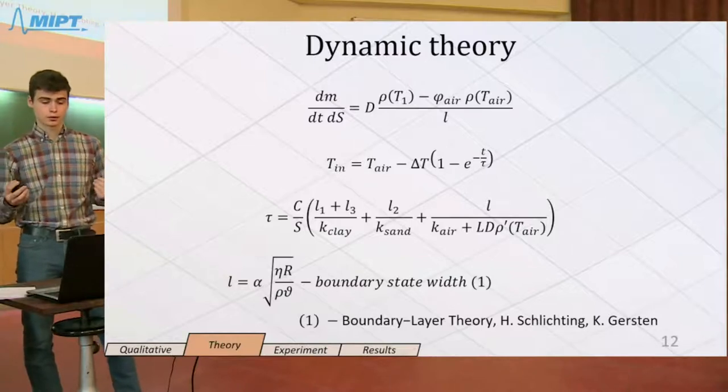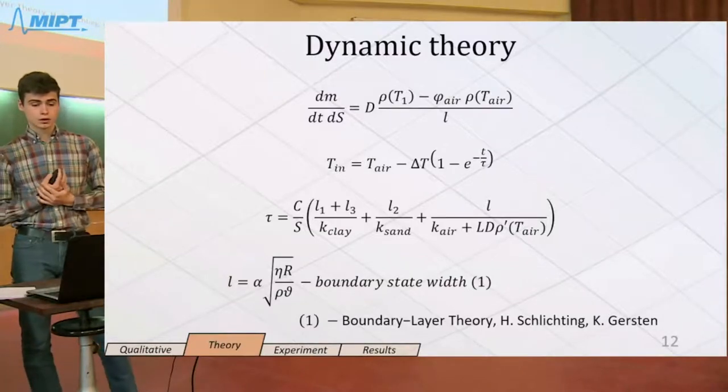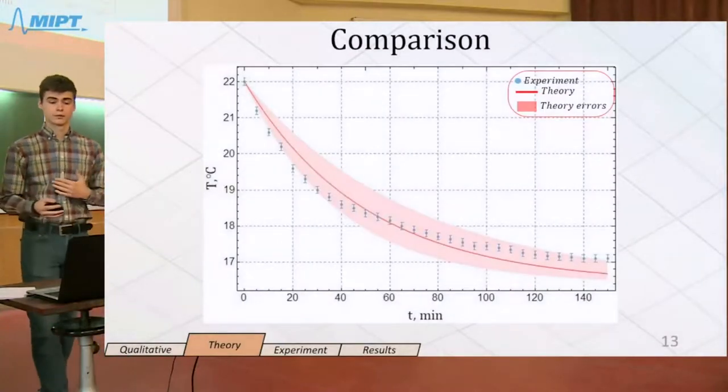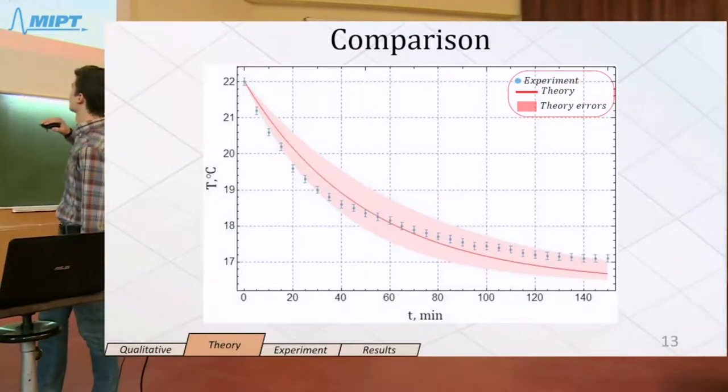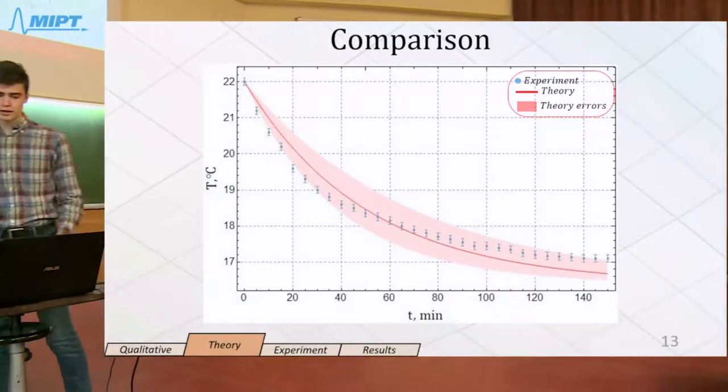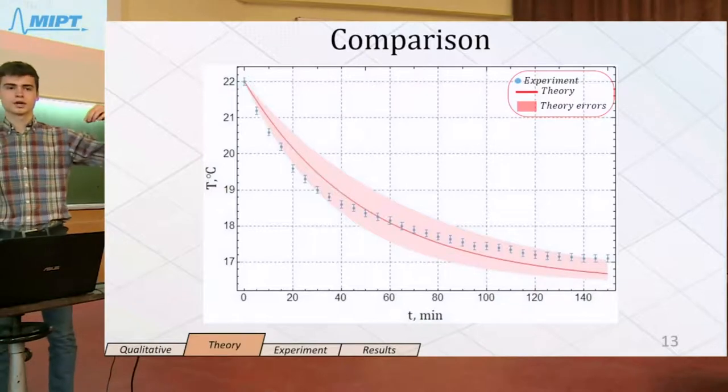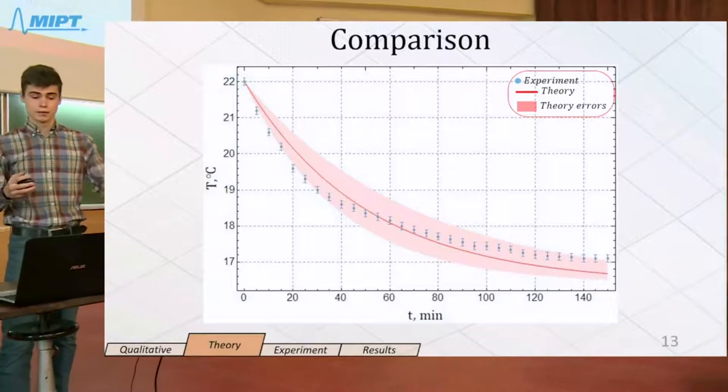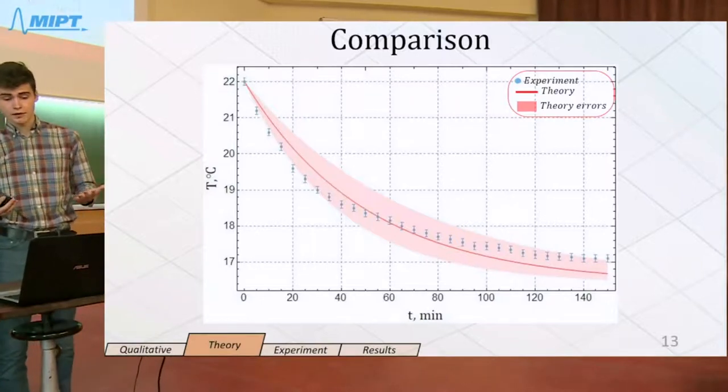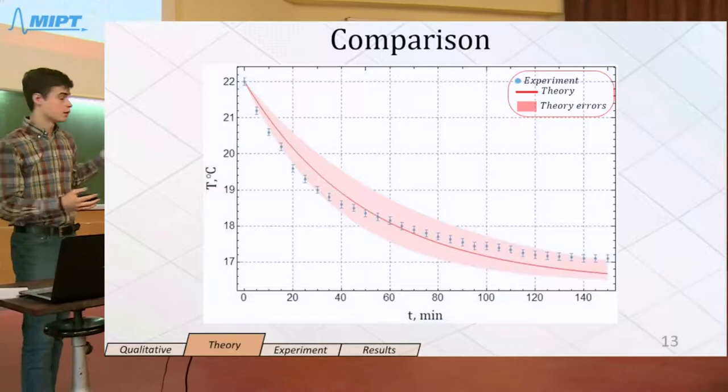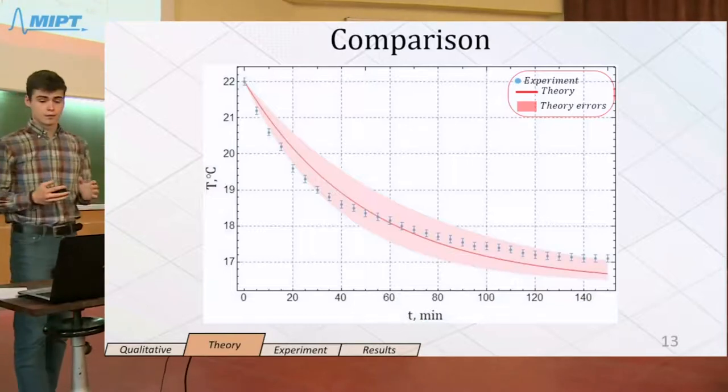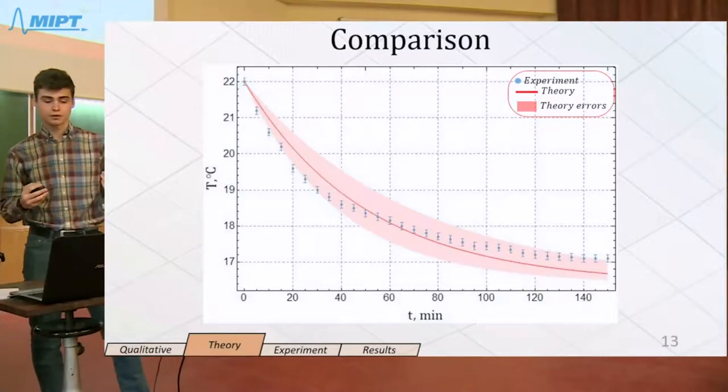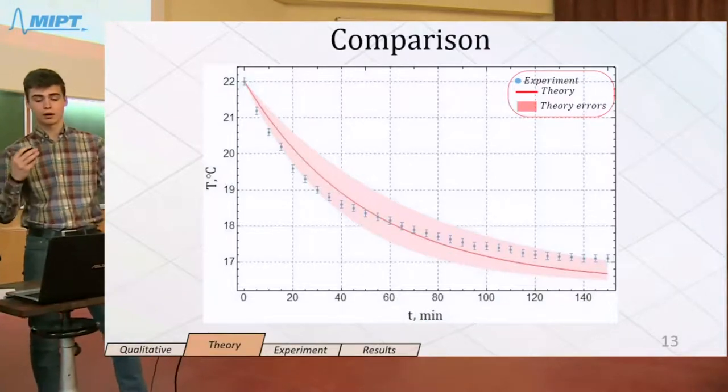Now we want to compare our theoretical model and real data. You could not see clearly, but there is a theory error area near the line and all our experimental points are in this area. But in the first moments there is somewhat faster cooling because it's not a quasi-static state when the boundary layer first appears.